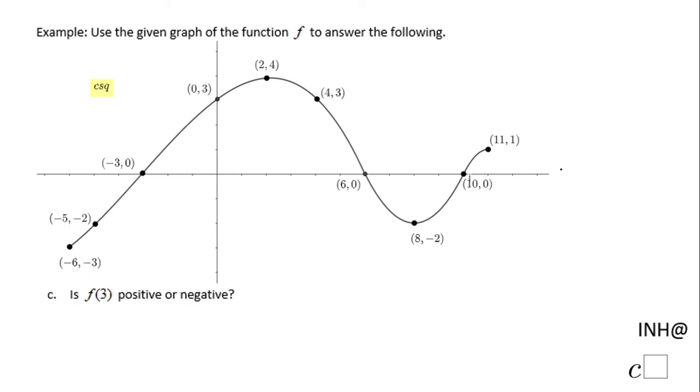Let's move to part C where we are asked if f of 3 is positive or negative. If we take a look, 3 is right here and we have to go up to get to our function f, and that is a positive value. f of 3 is a positive value.